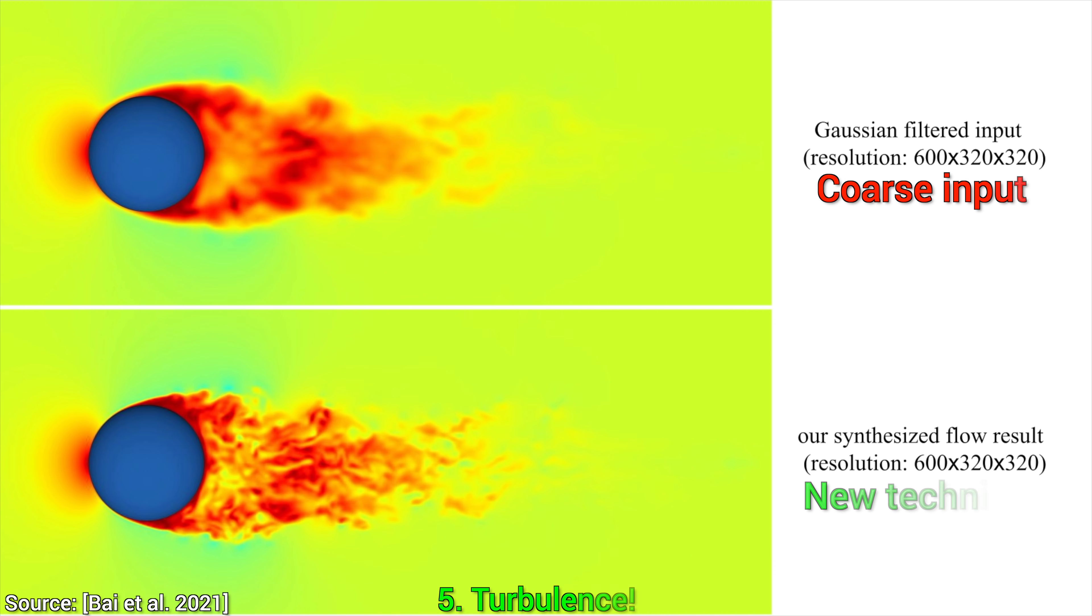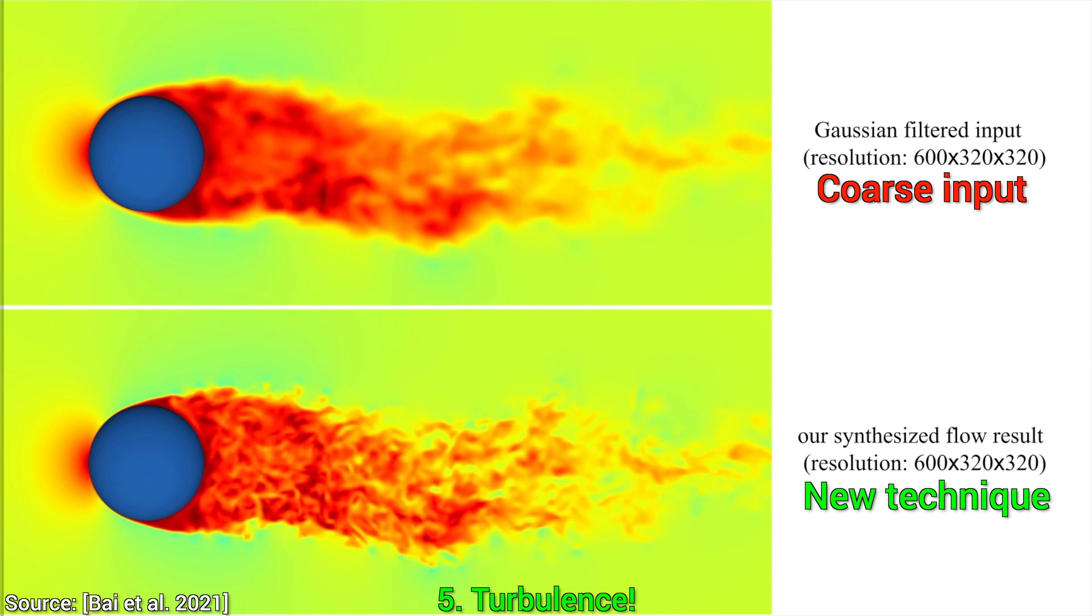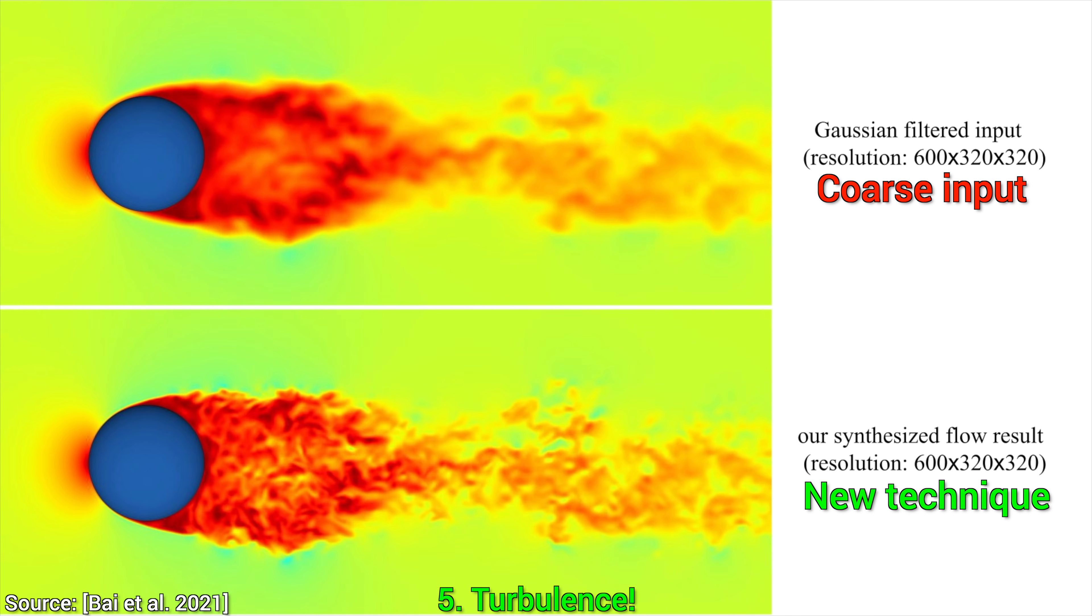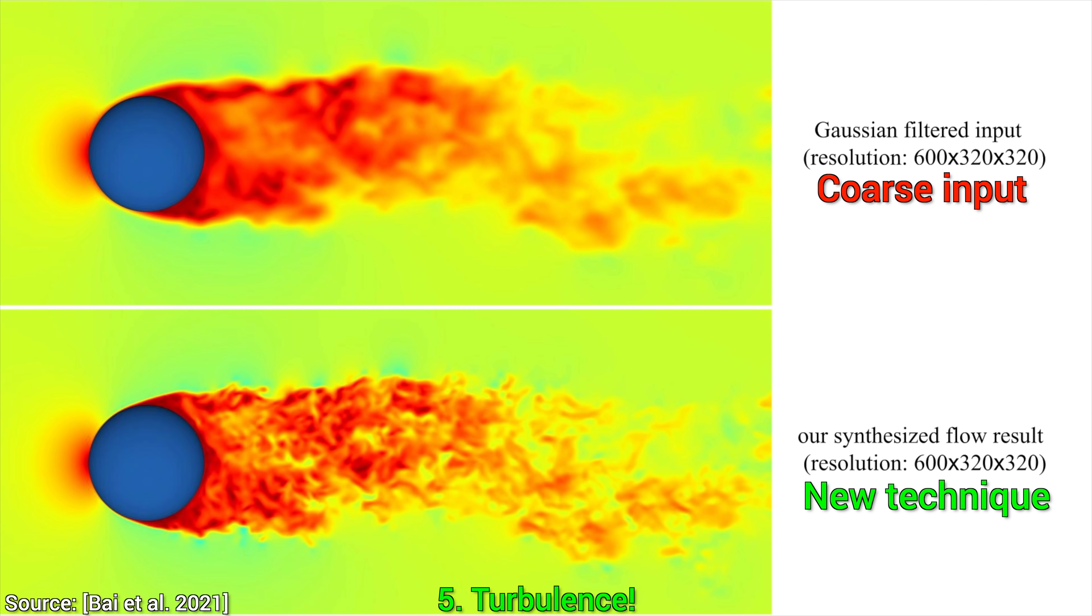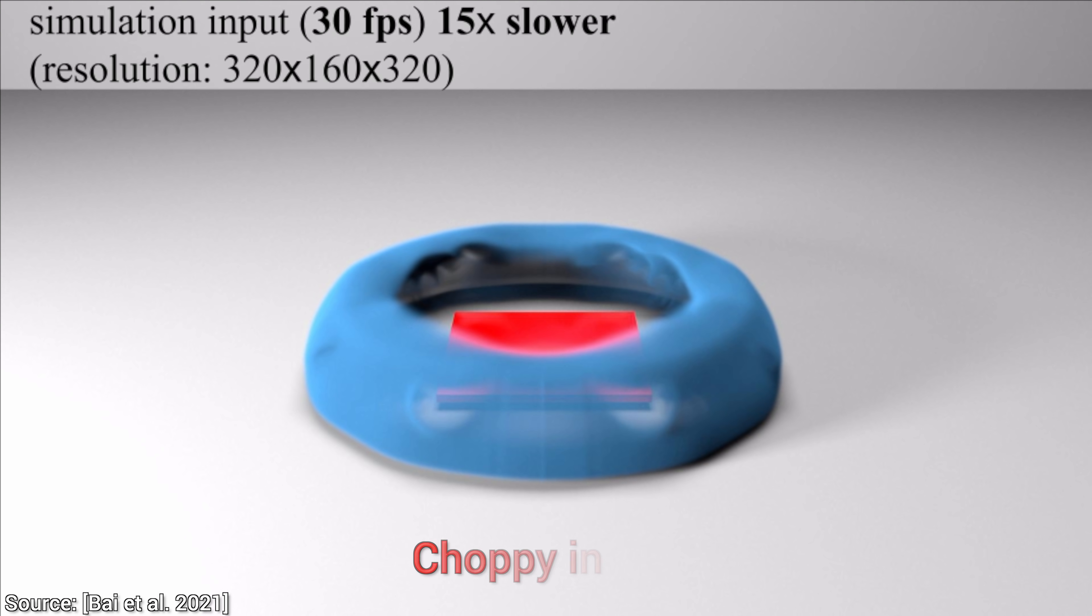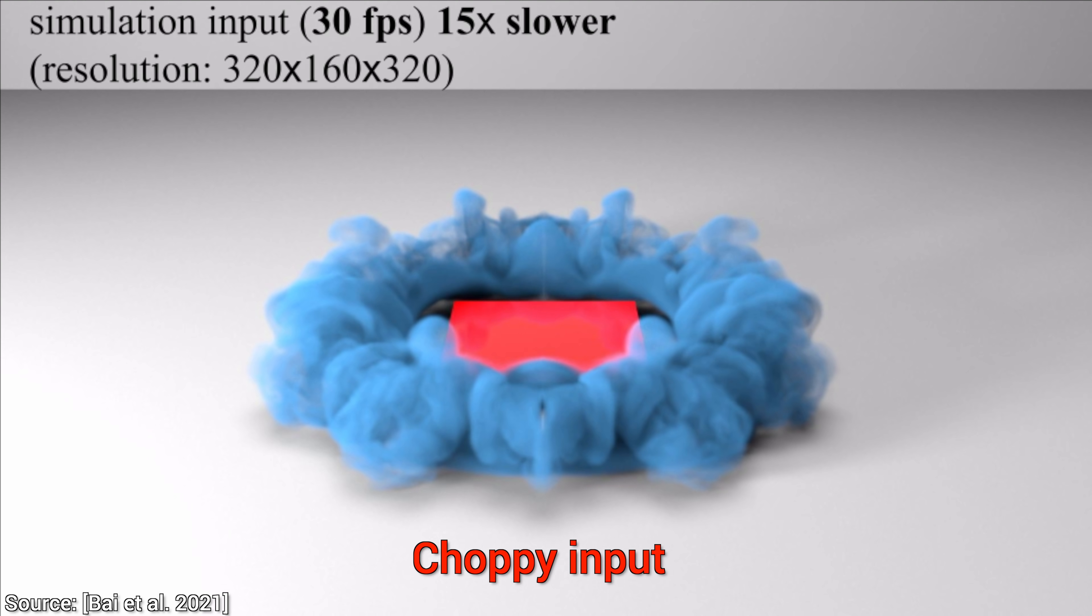5. It also works on super high Reynolds numbers. If we have some of the more difficult cases where there is tons of turbulence, it still works really well. This typically gives a lot of trouble to previous techniques.